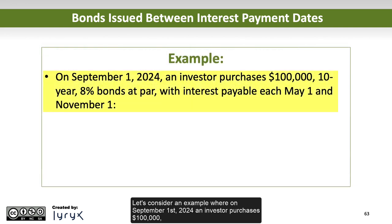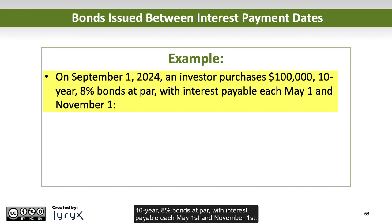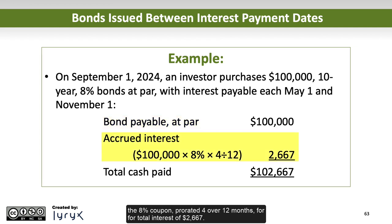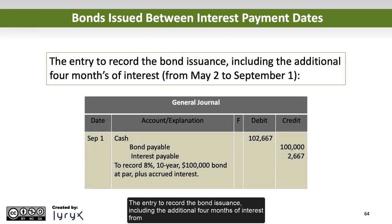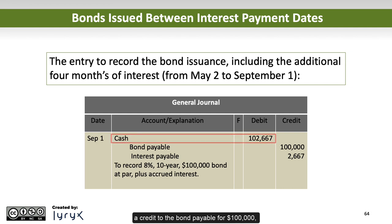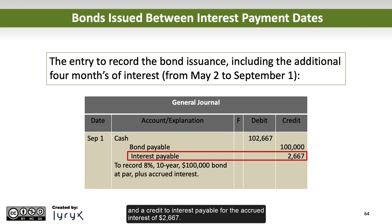For example, on September 1, 2024, an investor purchases $100,000, 10-year, 8% bonds at par, with interest payable each May 1 and November 1. The bond will sell for its par value plus any accrued interest calculated as the par value times the 8% coupon, prorated over 12 months, for total interest of $2,667. Thus, the total cash paid to purchase the bond is $102,667. The entry to record the bond issuance, including the additional 4 months of interest from May 2 to September 1, includes a debit to cash for $102,667, a credit to bonds payable for $100,000, and a credit to interest payable for the accrued interest of $2,667.